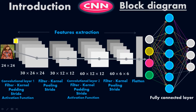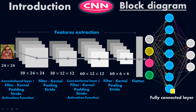This is the basic block diagram of a convolutional neural network model. From the input up to the flatten stage, we do feature extraction because CNN is used to analyze images. We have a lot of data, and we extract the important features and ignore some of them. If you pass a big image — 24 by 24, 100 by 100, or even 1000 by 1000 — directly to the fully connected layer, it is time-consuming, memory-consuming, and very expensive.